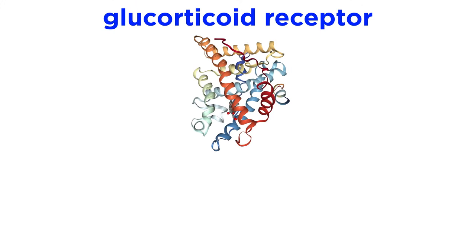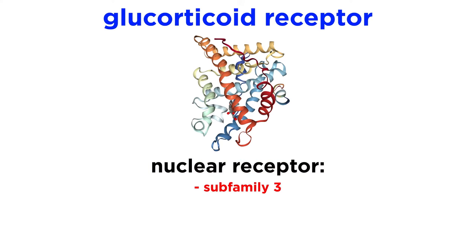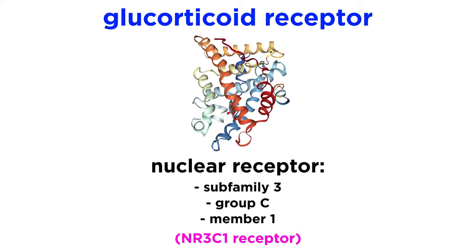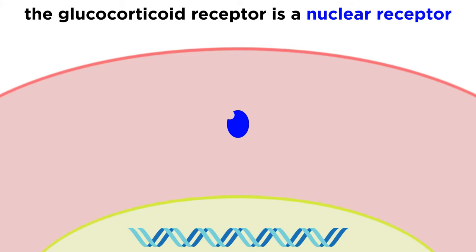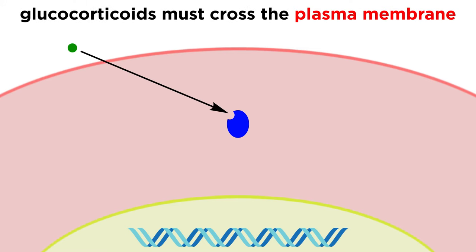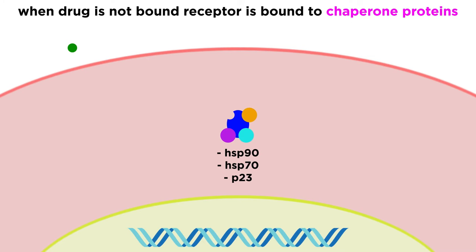Glucocorticoids mediate their efficacy through the glucocorticoid receptor, also sometimes referred to as nuclear receptor subfamily 3, group C member 1, or the NR3C1 receptor. As this name suggests, the glucocorticoid receptor is a nuclear receptor, which means that drugs in the glucocorticoid family must traverse the plasma membrane in order to reach their target receptor. The glucocorticoid receptor, without any drug bound, exists predominantly in the cytosol, bound to a complex of chaperone proteins: Hsp90, Hsp70, and P23.